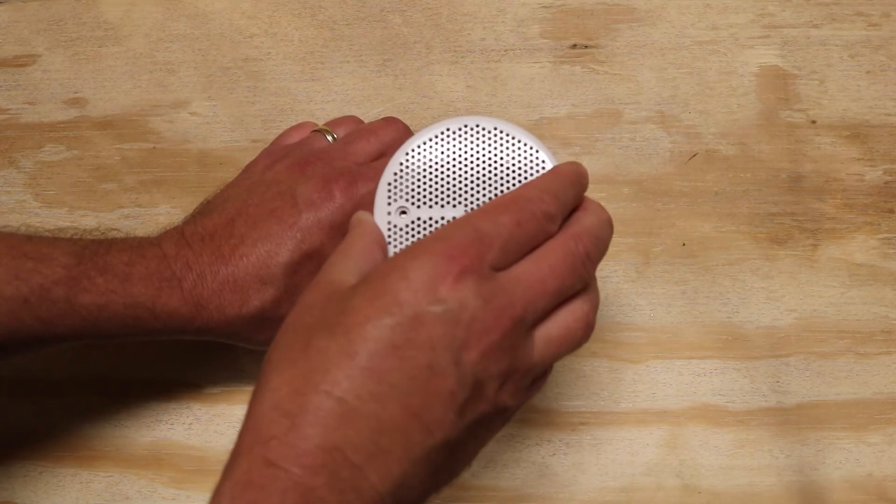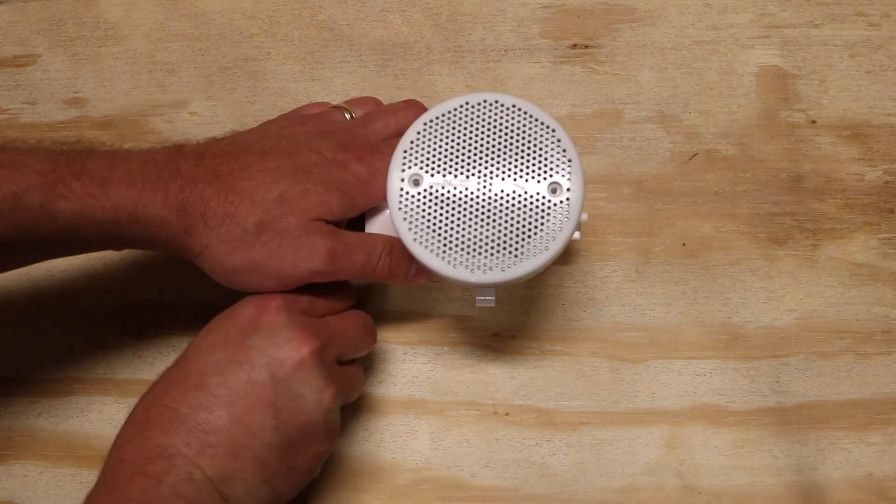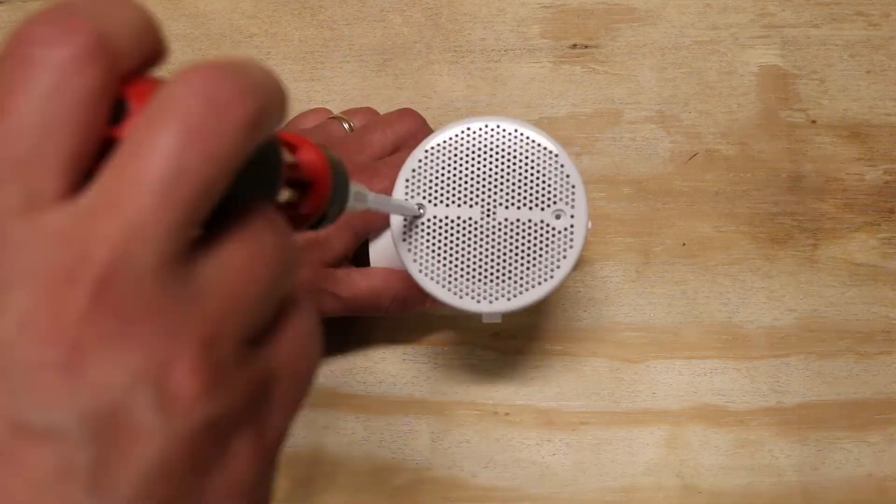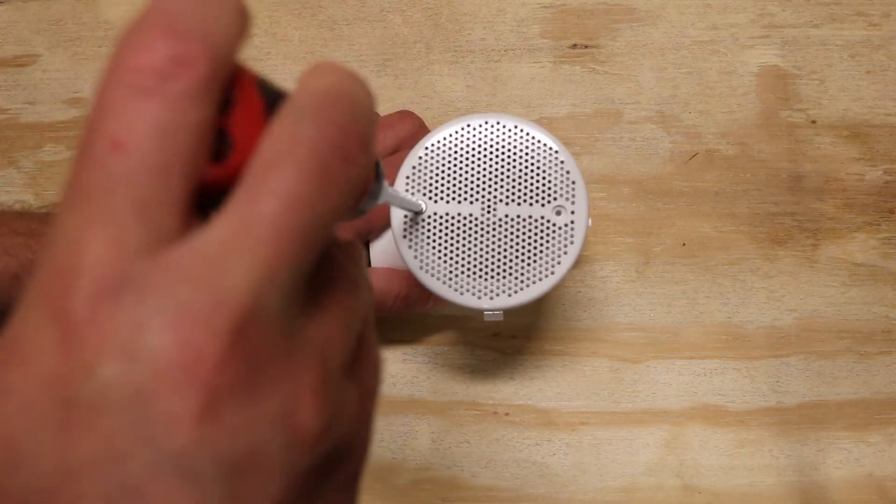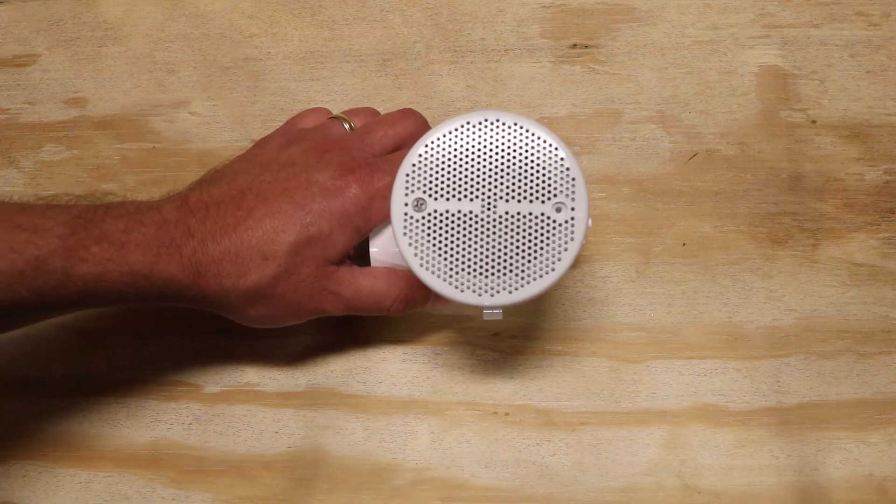Then screw in the two screws that come with it. You're going to use a small Phillips head screwdriver to screw the two screws in. Trick of the trade: make sure you have your drain closed in your bathtub so these screws don't inadvertently go sliding down your drain.